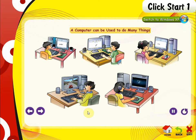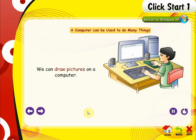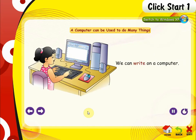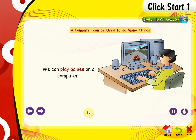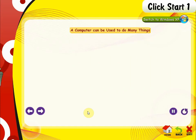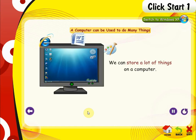A computer can be used to do many things. We can solve sums on a computer. We can draw pictures on a computer. We can write on a computer. We can play games on a computer. We can listen to music on a computer. We can store a lot of things on a computer.